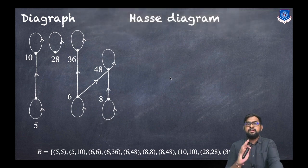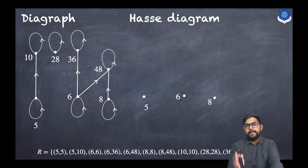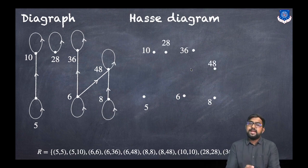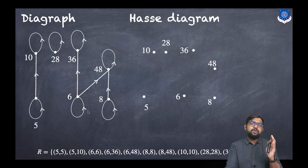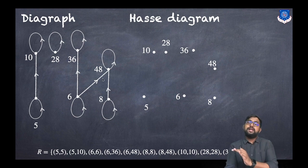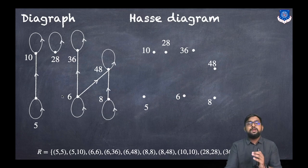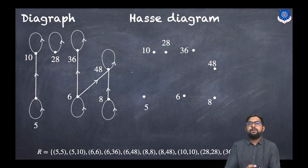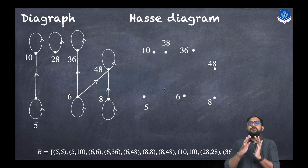Now we construct the Hasse diagram. All points remain the same: 5, 6, 8, 10, 28, 36, and 48. First step: remove all self-loops — there are seven self-loops in the digraph, so all are removed. Second step: remove all arrow directions. Third step: remove transitive edges — in this example there are no transitive edges; we will discuss that in later examples.